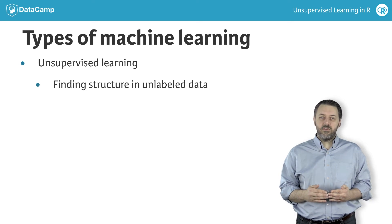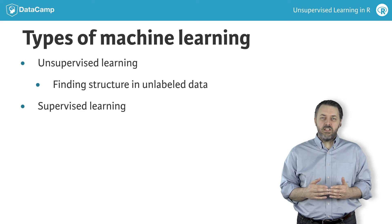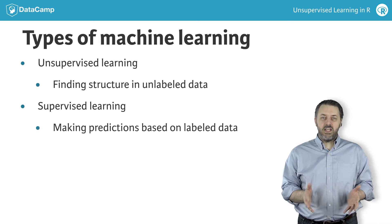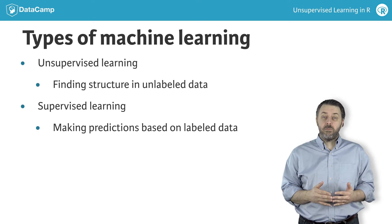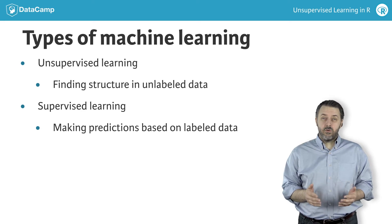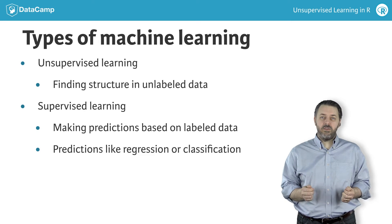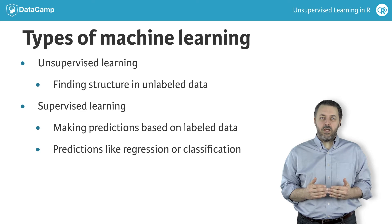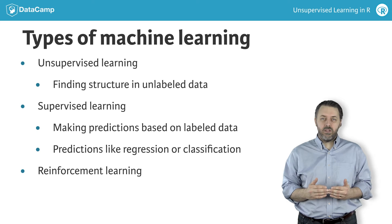Contrast this with supervised learning. Supervised learning is used when you want to make predictions on labeled data, on data with a target. Types of predictions include regression, or predicting how much of something there is or could be, and classification, which is predicting what type or class something is or could be. The final type is reinforcement learning, where a computer learns from feedback by operating in a real or synthetic environment.